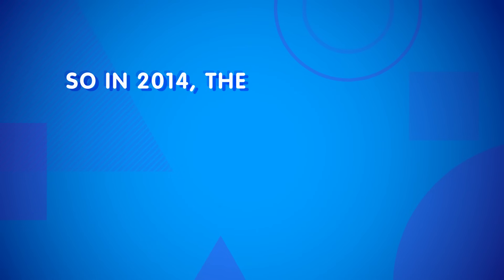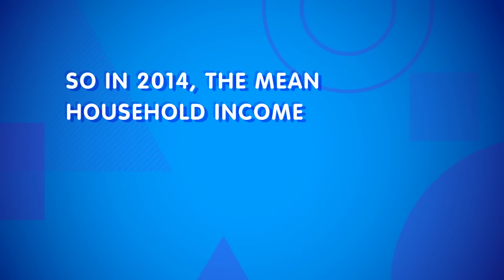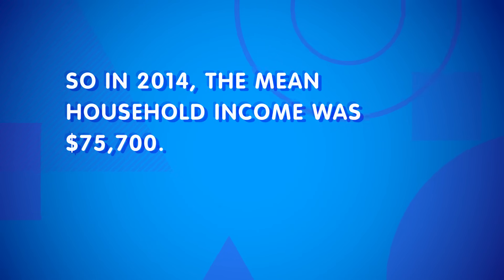The median may be the observation in the middle, but it's not the same as the average household income. That distinction goes to the mean, which is the sum of all the values divided by the number of observations. So in 2014, the mean household income was $75,700. That's a lot higher than the median. What's up with that? Why is there a gap between the mean and the median?